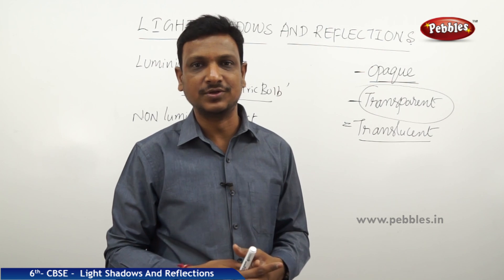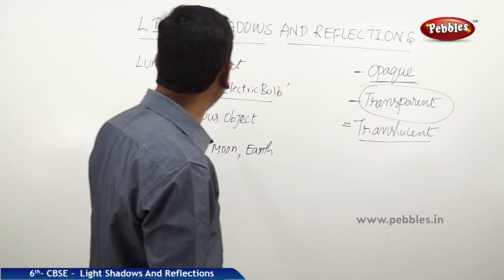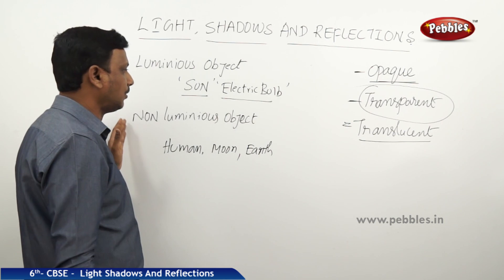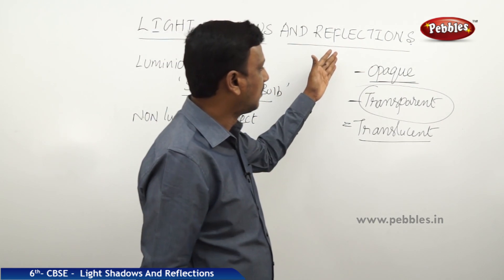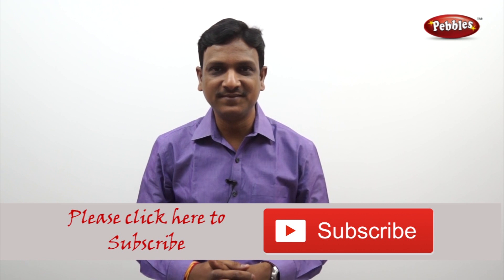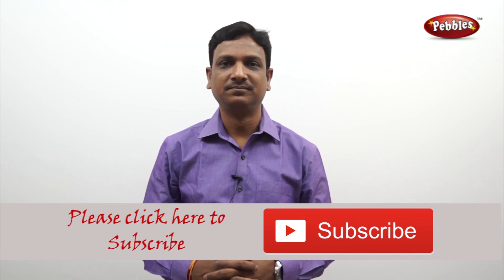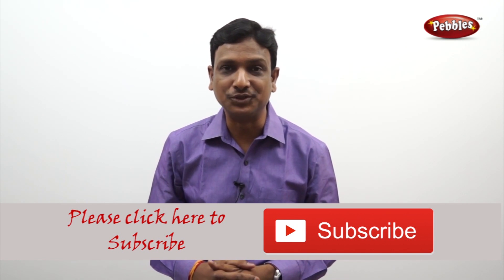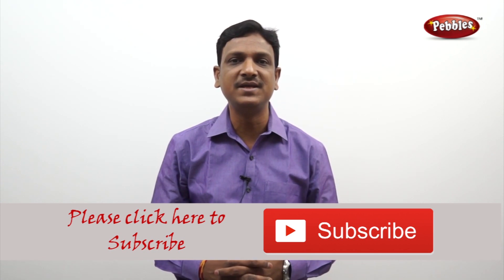So now we are familiar with the terms: luminous object, non-luminous object, opaque, transparent, and translucent. If you like this video, please give a thumbs up and subscribe to our channel to get more videos on the CBSE syllabus.